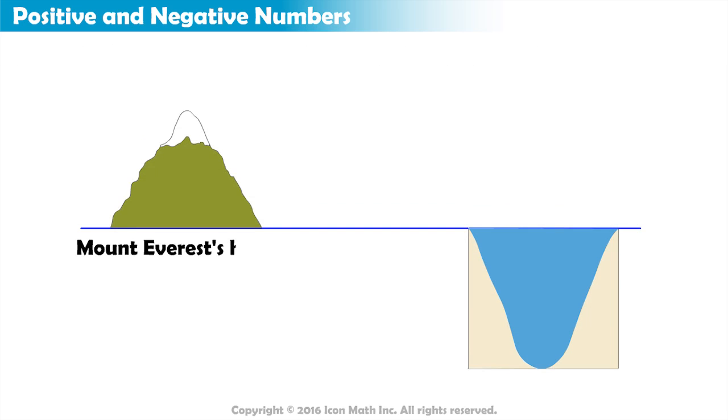Mount Everest, Earth's highest mountain, is 29,029 feet above sea level. Since sea level is represented by the integer 0, Mount Everest's height would be represented by the integer positive 29,029.